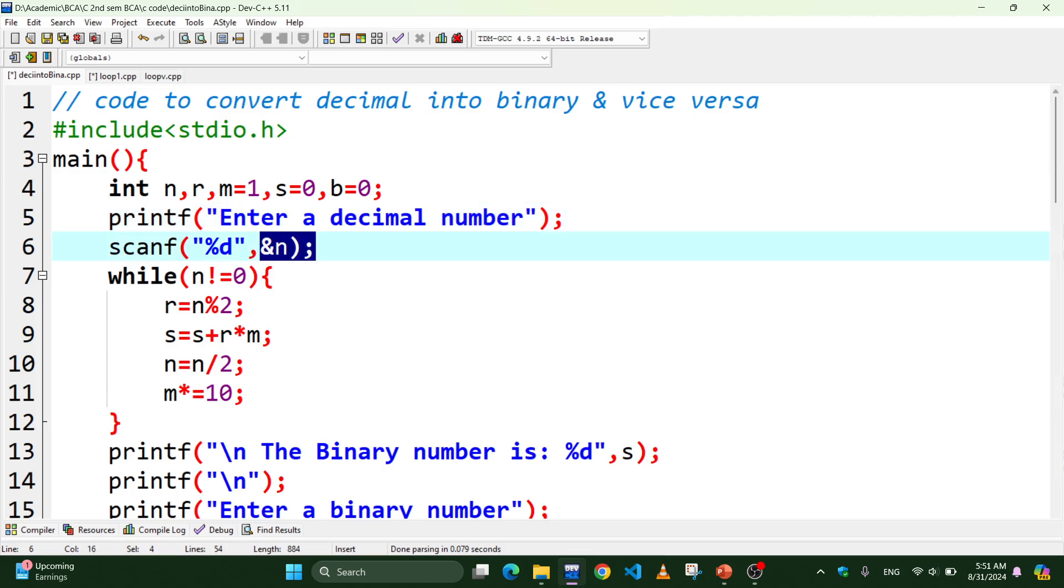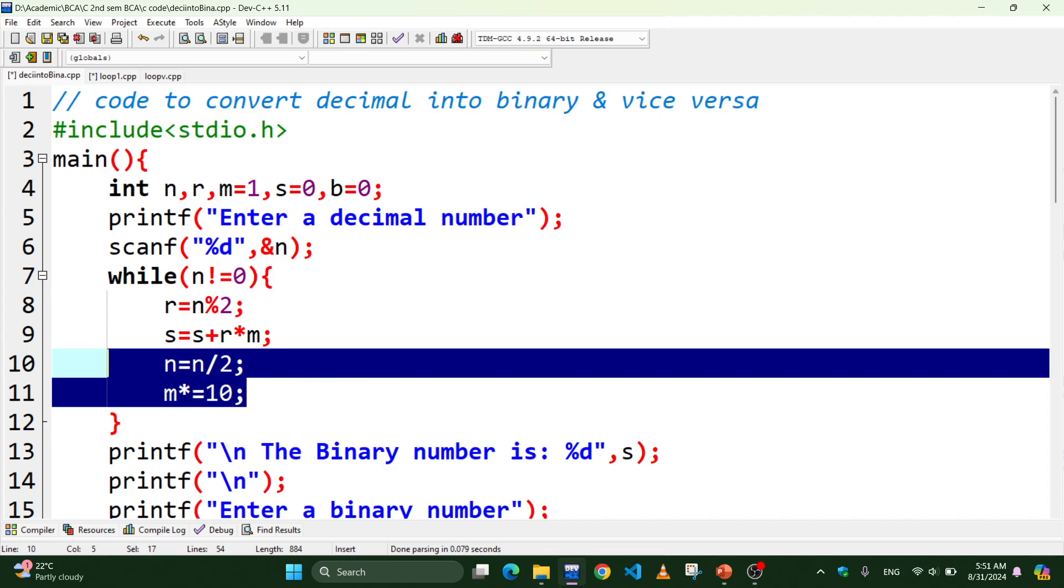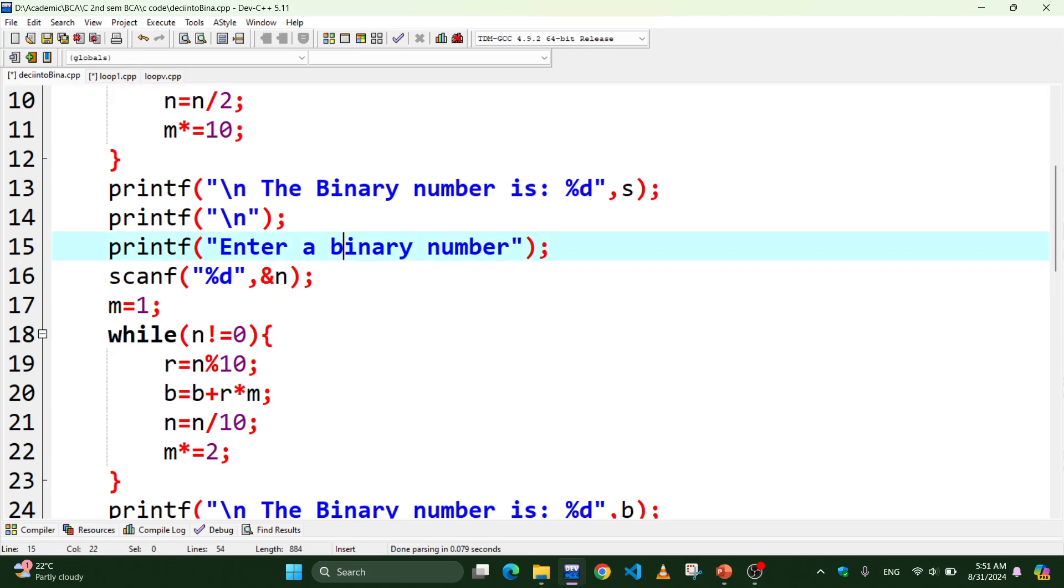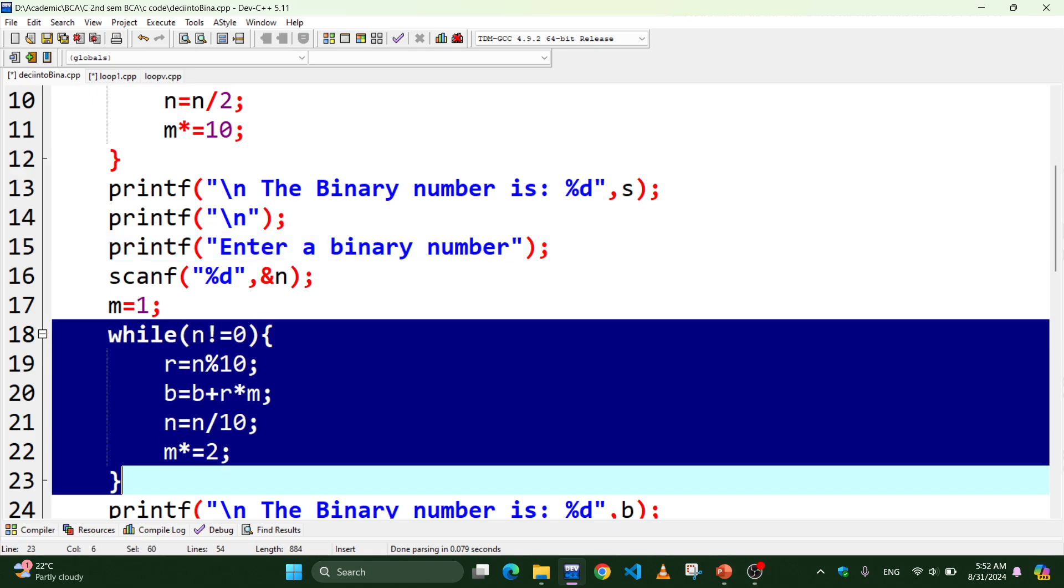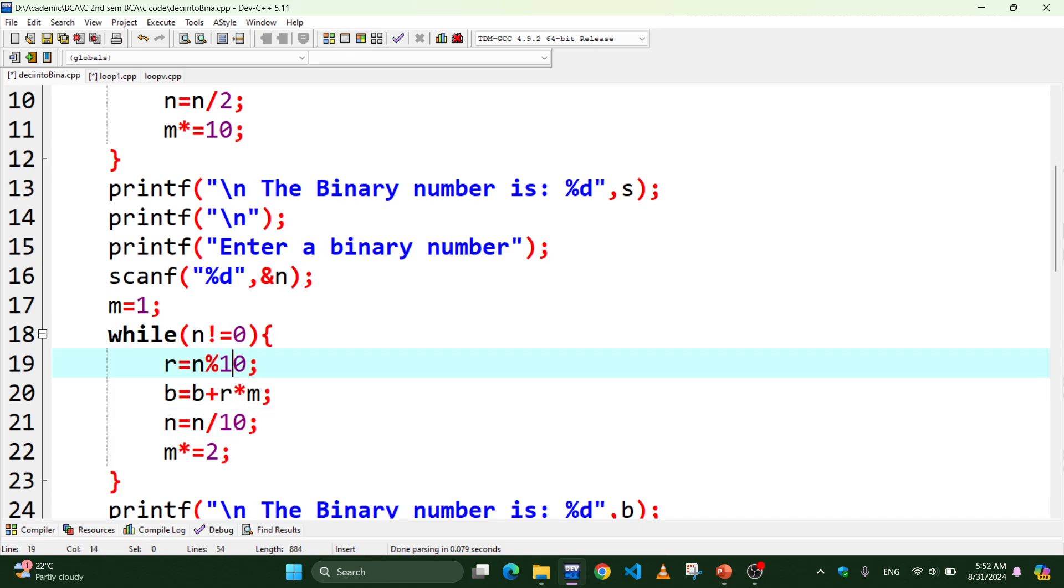The b variable will calculate the binary equivalent. We multiply by 10 each iteration. When we go into the loop, we multiply by 10 and add the remainder. If you have questions about binary or decimal conversion, please comment so I can include it in the next video.